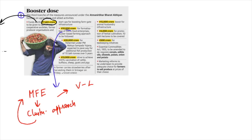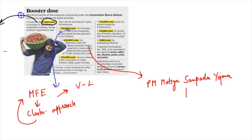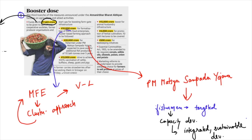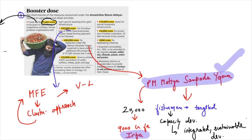Government is announcing the Pradhan Mantri Matsya Sampada Yojana. Under this scheme, fishermen will be supported and capacities will be developed in them for integrated, sustainable and inclusive development of marine fisheries as well as inland fisheries. 20,000 crore rupees will be invested, and a part of this money will also be used for making infrastructure such as fishing harbors and cold chain markets. This scheme is very important because it will give a huge booster to the idea of blue revolution or Neel Kranti, under which the country utilizes its marine resources to improve its economic prospects.